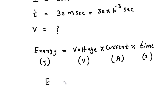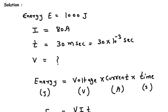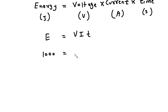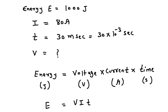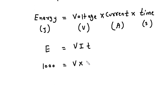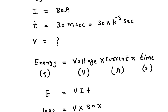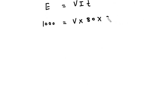So here this will be E is equal to V times I times T. The value of energy is 1000 joules, so 1000 is equal to V — the voltage we have to find — multiplied by current I which is 80 ampere, multiplied by time which is 30 into 10 to the power minus 3 seconds.